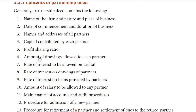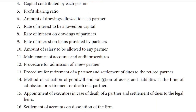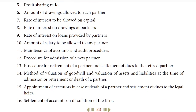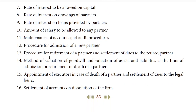Sixth, amount of drawings allowed to each partner. Seventh, rate of interest to be allowed on capital. Eighth, rate of interest on drawings of partners. Ninth, rate of interest on loans provided by the partners. Tenth, amount of salary to be allowed to any partner. Eleventh, maintenance of accounts and audit procedures. Twelfth, procedure for admission of a new partner. Thirteenth, procedure for retirement of a partner and settlement of dues to the retired partners. Fourteenth, method of valuation of goodwill and valuation of assets and liabilities at the time of admission, retirement, or death of a partner. Fifteenth, appointment of executors in case of death of a partner and settlement of dues to the legal heirs. Sixteenth, settlement of accounts on dissolution of the firm.